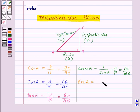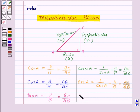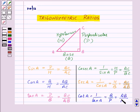Secant A is 1 upon cos A, so this will be H upon B, that is hypotenuse upon base, which will be AC upon AB. And lastly, cot A is 1 upon tan A, so this will be B upon P, that is base upon perpendicular, which will be AB upon BC.